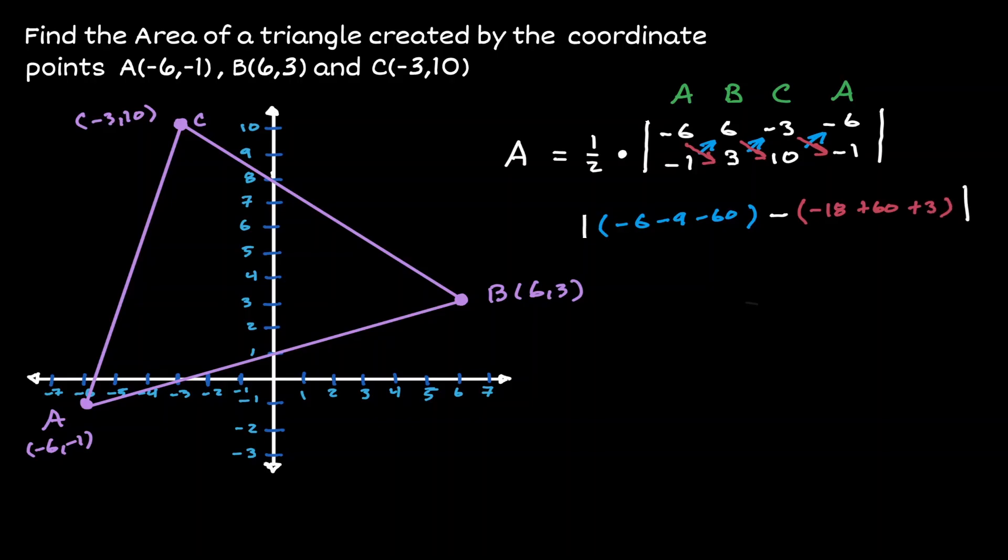And don't forget that we always need to multiply this procedure times 1 half. And this procedure is what we call the shoelace method, because notice that when we were multiplying in a positive direction diagonally, in a negative direction diagonally, it kind of looks like you're tying your shoelaces.